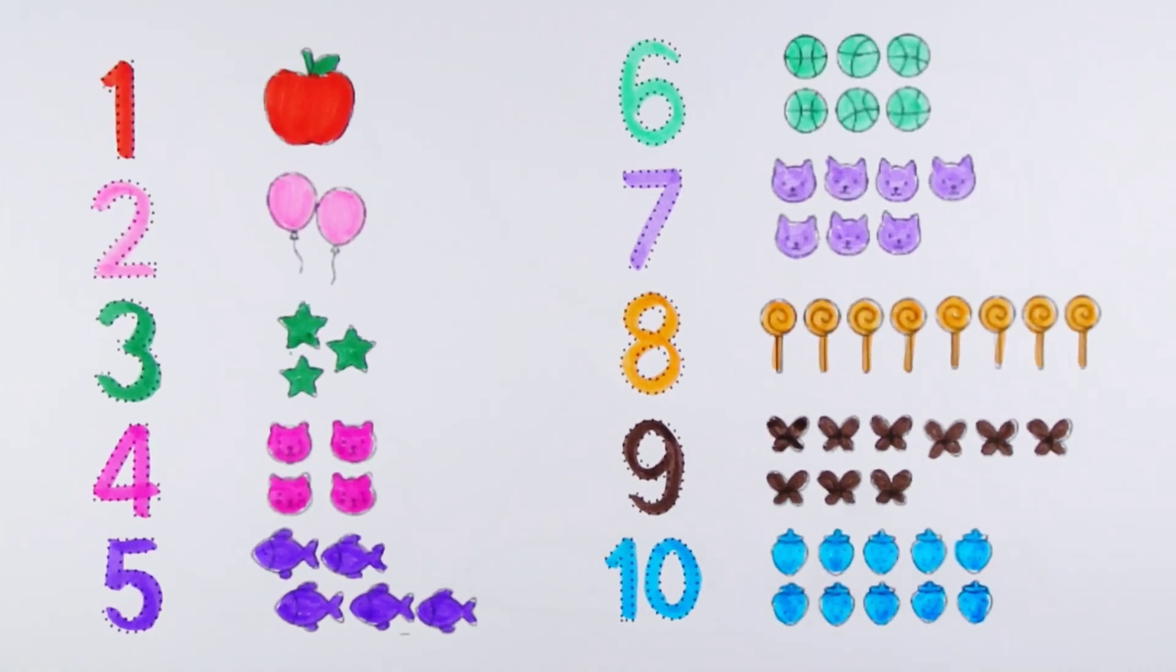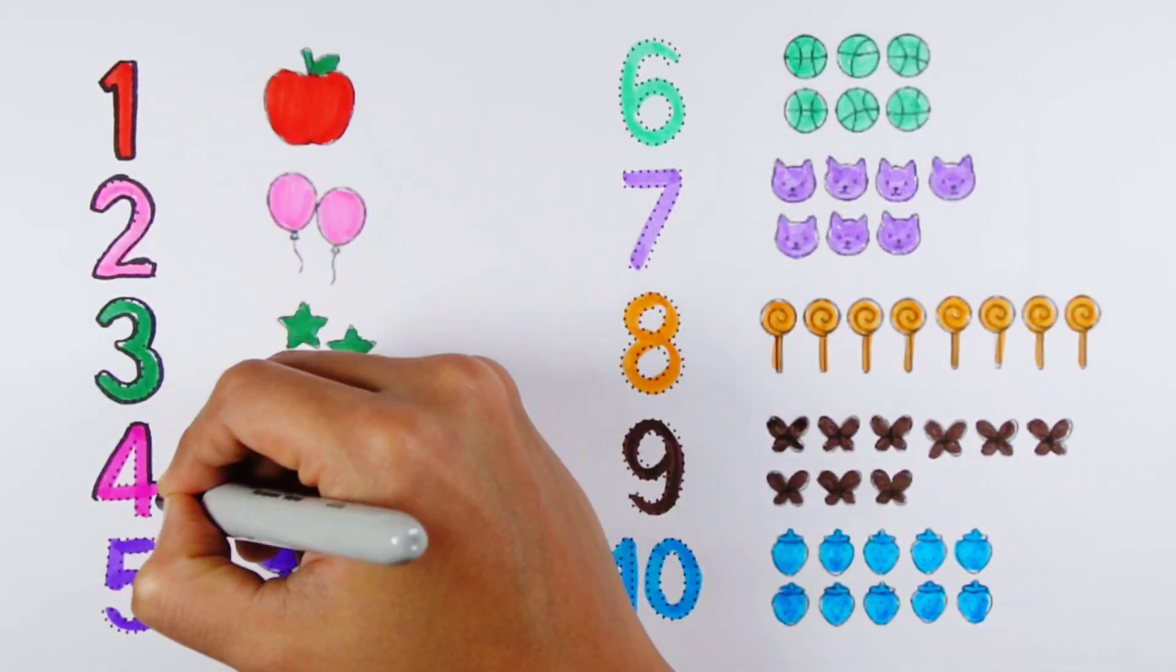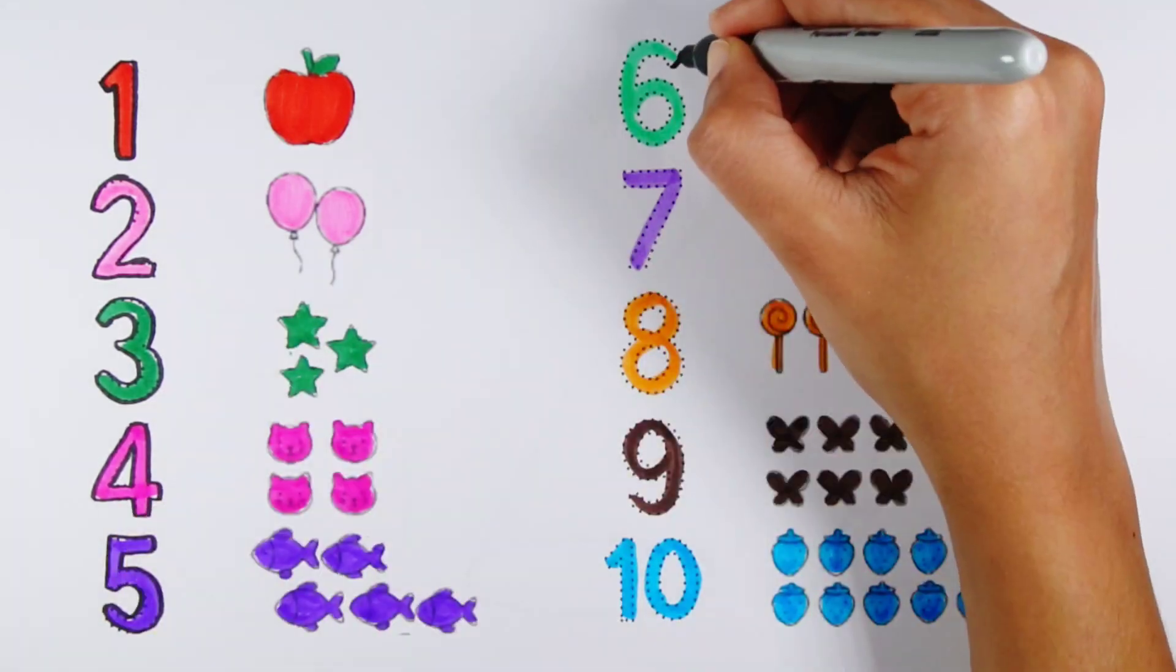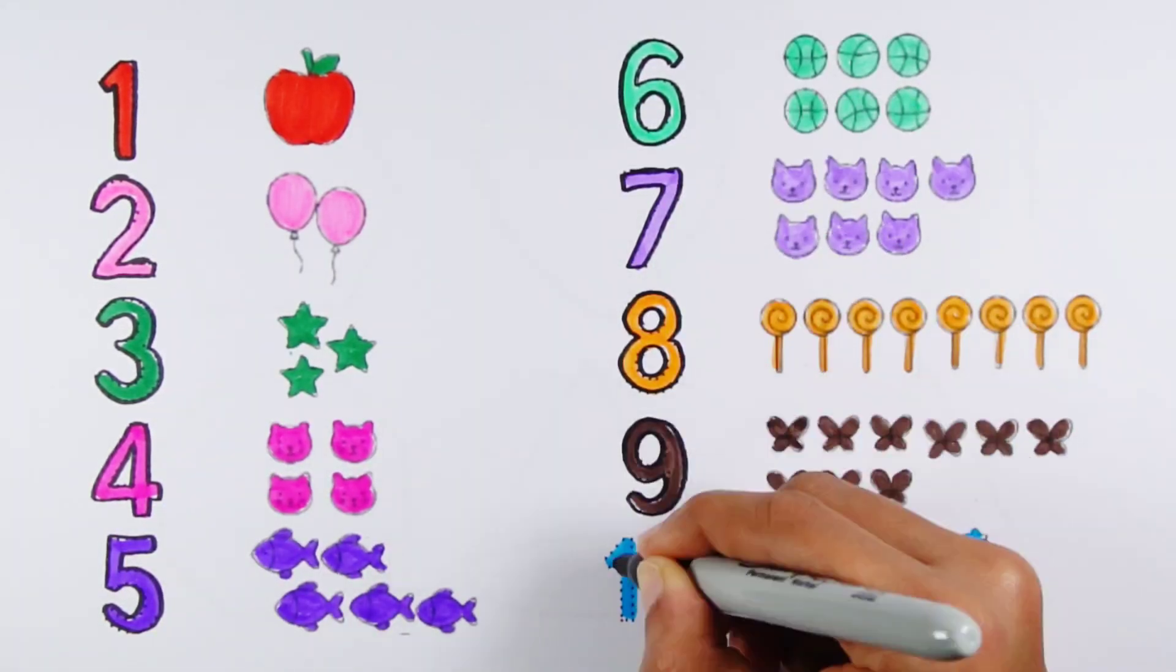Can you count with me now? One, two, three, four, five, six, seven, eight, nine, ten.